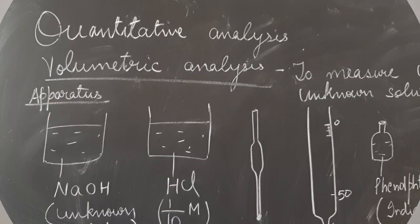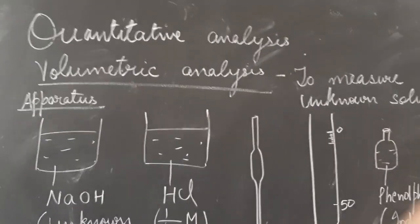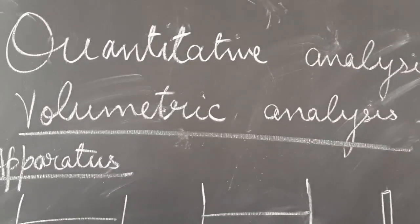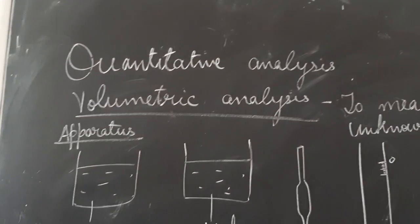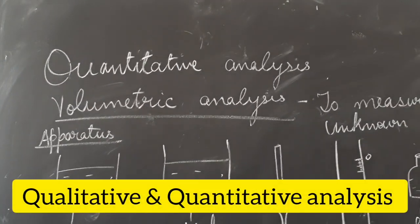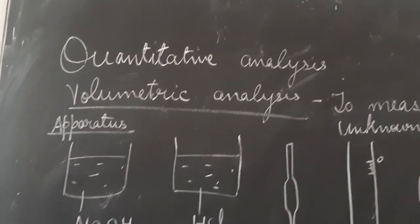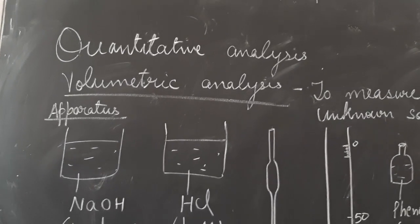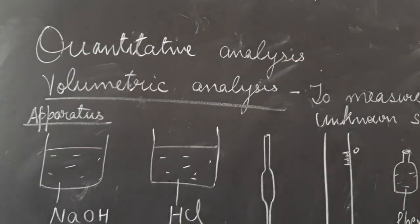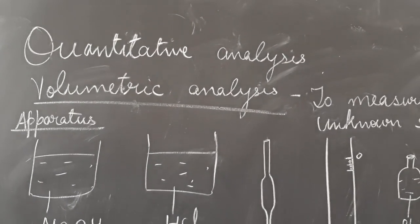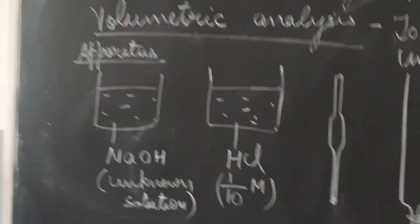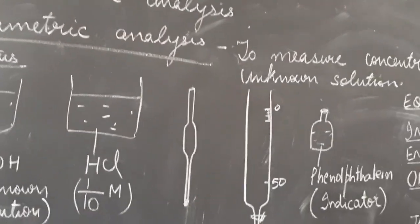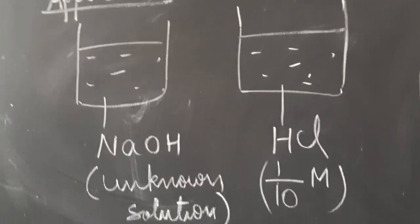Let us proceed. I'm going to give you details first about what kind of experiment this is. We are going to start the discussion of quantitative analysis. There are two kinds of analysis in chemistry: quantitative analysis and qualitative analysis. These two are part of your Class 11 syllabus. Qualitative analysis means we just need to know what is present in a particular compound — for example, if I give you a salt and ask you to identify its components, that would be qualitative analysis.